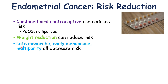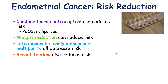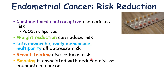Late menarche, early menopause, and multiparity are all things that will decrease the risk of endometrial cancer. Late menarche and early menopause both shorten the time span whereby a patient is exposed to estrogen. Multiparity does the same. After delivery of a baby, breastfeeding exclusively also reduces risk because the prolactin from breastfeeding helps to inhibit menstrual cycles, which reduces estrogen exposure as well.